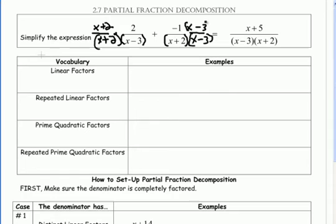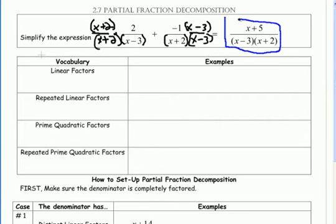Then I distribute to the numerators and combine them. Doing that, I get x plus 5 over x minus 3 times x plus 2. But what we're going to be talking about is actually the reverse of this — we're going to start with this fraction and try to get back to the original two fractions. This process is called partial fraction decomposition — making partial fractions from a big fraction, where decomposition means breaking it down into its parts.